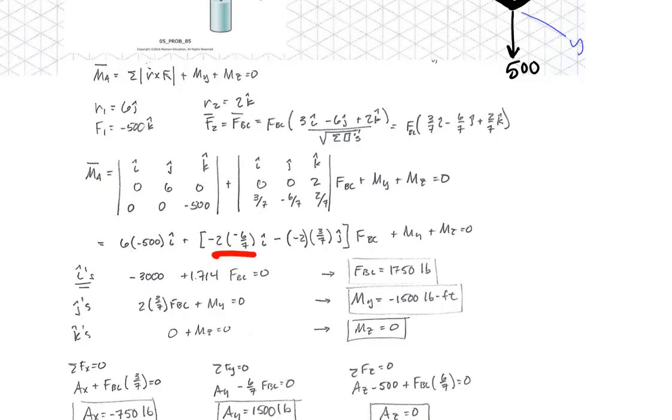Multiply them all out. You get this, add the I's together, so we got negative 3,000 plus a factor here times F_BC. You get that is equal to zero, and you can solve for the force in BC of 1750. And then the J's. Take the J components, which is that one and this one, and then you put that equal to zero, and you can solve for the moment about the Y-axis. And then the Z direction. I don't have any components in my cross products about Z, so therefore the moment about Z is equal to zero.